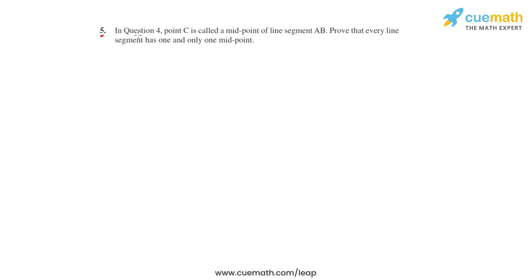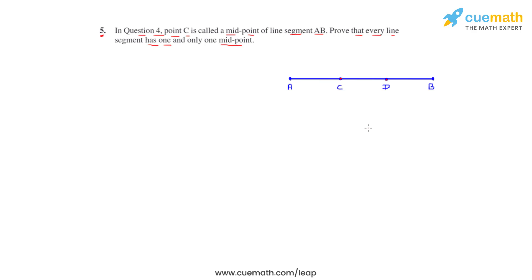Question number 5 says that in question 4, point C is called a midpoint of line segment AB. We have to prove that every line segment has one and only one midpoint. So let's have a line segment AB and let's say that it has got two midpoints — midpoint C and midpoint D — assuming first that C is the midpoint.